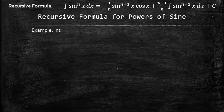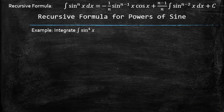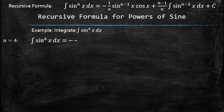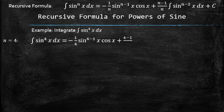Let's use the recursive formula to find the integral of the sine raised to the 4th power. To apply the formula, we set n equals 4 and replace every appearance of n in the formula with 4.